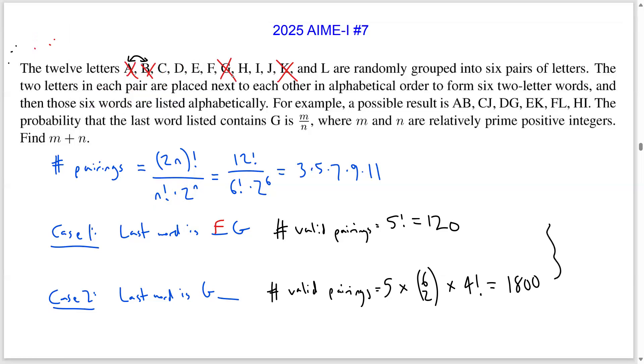So adding up the number of ways in these cases, we get 1,920 valid pairings. And so the desired probability is going to be 1,920 over the total number of valid pairings, which is given by this denominator. When we simplify this fraction, we will get 128 over 693, and we're looking for M plus N. And that's going to be 821 as our answer.